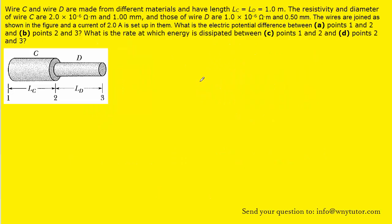If you haven't done so yet, make sure that you pause the video and try to answer the question on your own first before listening on. In part A, we are asked to calculate the electric potential difference between points 1 and 2. And we'll notice that those two points are located within wire C.